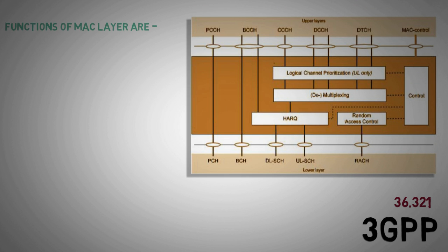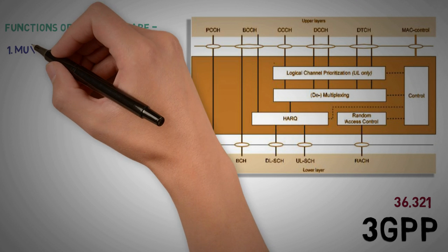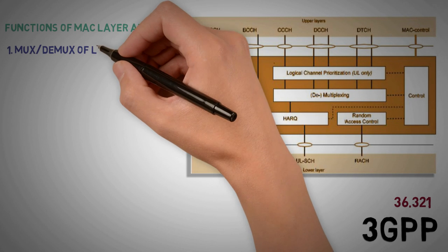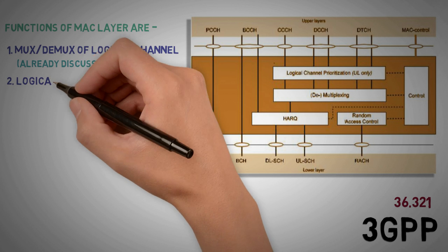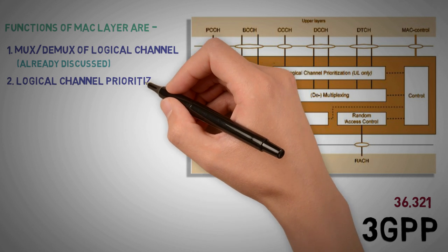As per 3GPP 36.321, the functions of MAC layer are: 1. Multiplexing of logical channels, which is already discussed. 2. Logical channel prioritization.